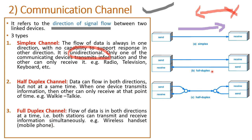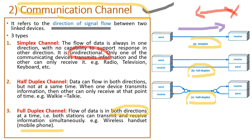Now let us understand the term full duplex signal. Here the example is a wireless handset or mobile phone — the flow of signals can happen in both directions simultaneously. For example, if you are talking over a mobile phone, you are also speaking and your friend is also speaking simultaneously. In full duplex it happens simultaneously; in half duplex, one after the other; and in simplex, it is only one direction.